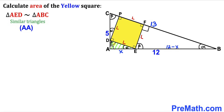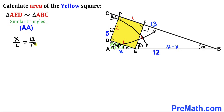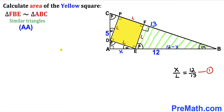Here's our next step: let's focus on tiny right triangle AED and big right triangle ABC. These two right triangles AED and ABC are similar triangles according to the angle-angle similarity theorem. So we are going to write a proportion. The side opposite to angle beta is x and the side opposite to the 90-degree angle is l, so we write x/l. In triangle ABC, the side opposite to angle beta is 12 and the side opposite to 90 degrees is 13, giving us 12/13. Let's call this equation number one.